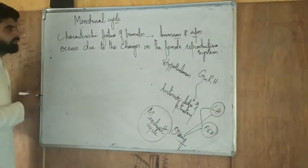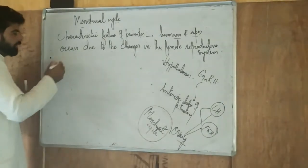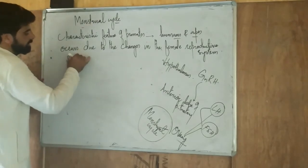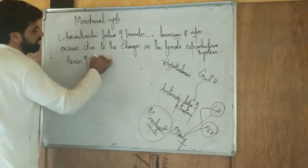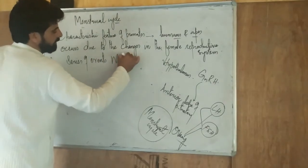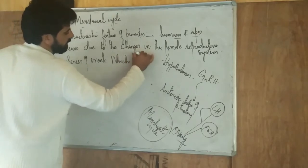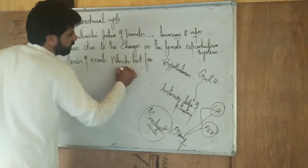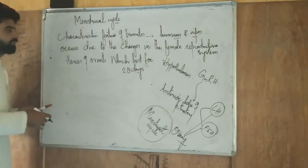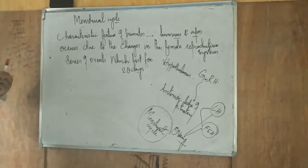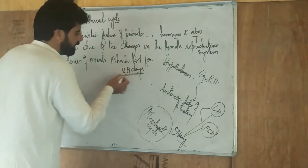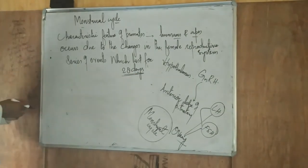One important thing is that the menstrual cycle is actually a series of biological events which last for 28 days. There are various events which first take place, and after 28 days we call that cycle the menstrual cycle.